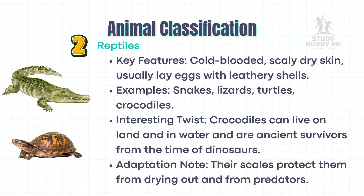Reptiles: Key features — cold-blooded, scaly, dry skin; usually lay eggs with leathery shells. Examples: snakes, lizards, turtles, crocodiles. Interesting twist: crocodiles can live on land and in water and are ancient survivors from the time of dinosaurs. Adaptation note: their scales protect them from drying out and from predators.